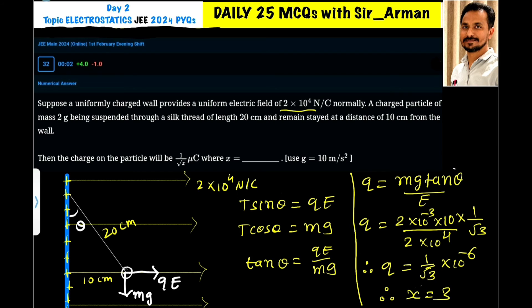Tan 30° is 1/√3. So if you solve this, the 2 and 2 will get cancelled. Here it is 10⁻³ and this becomes 10⁻⁴, so 10⁻⁷ into 10 is 10⁻⁶.